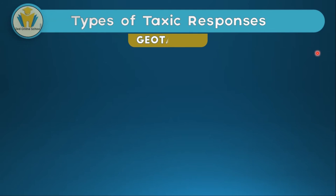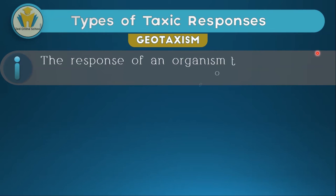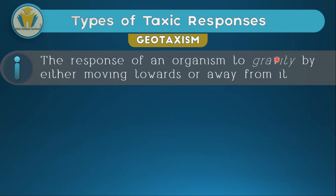Now let's look at geotaxism. As you know, 'geo' is usually used for gravity, and so geotaxism is the response of an organism to gravity — it will either move towards or away from it. If it moves towards, it will be positive geotaxism; if it moves away, it will be negative geotaxism. Sometimes the word 'gravi' may be used instead of 'geo', so this response may be referred to as gravitaxism, though mostly it will be called geotaxism.